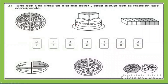Ahora me dicen: une con una línea de distinto color cada dibujo con la fracción que corresponda. Vamos a empezar. Vemos aquí que hay ocho partes de esta pizza. Pero hay tres partes que están sombreadas. Por lo tanto, esta fracción sería tres octavos.